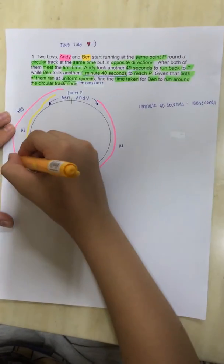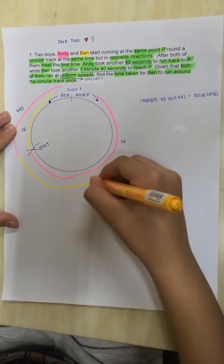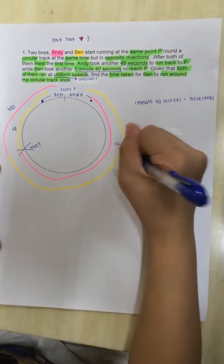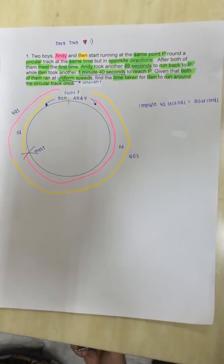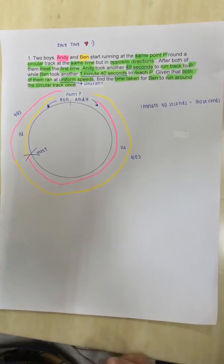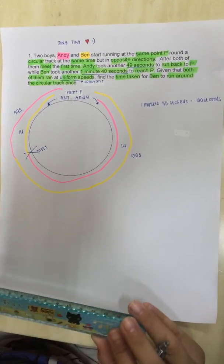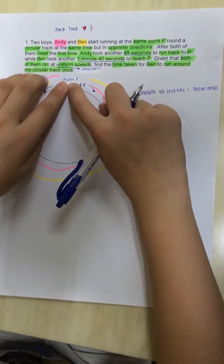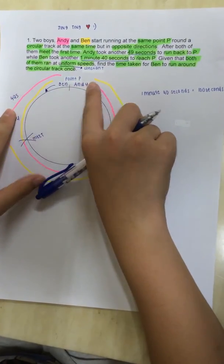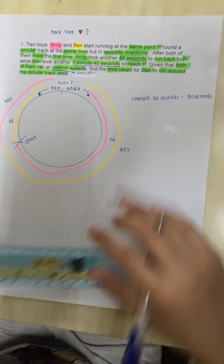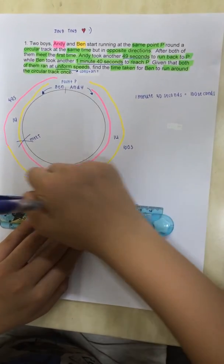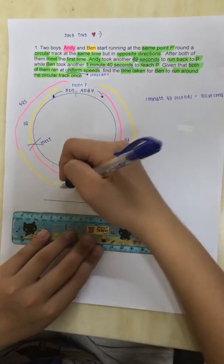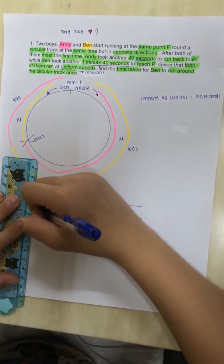So, Ben continued running after the meeting point, all the way back to point P. And, he took 100 seconds. Now, to continue with our question and our solution, we should actually make it more not confusing and make this circular track into a straight line by separating it like that. So, we can draw a straight line here, two straight lines as one straight line for what Ben is running and Andy.